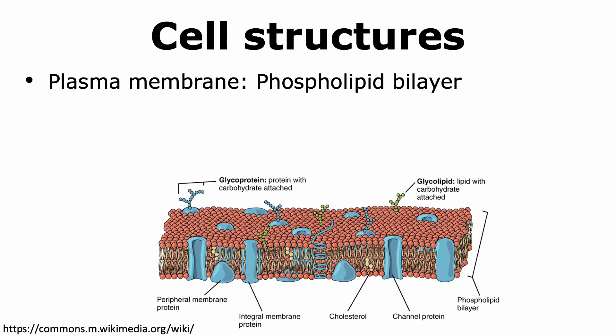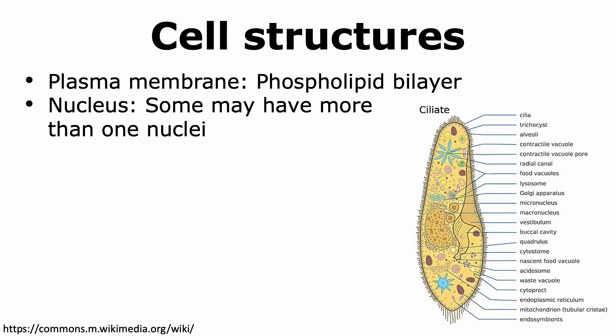A typical protist cell has a plasma membrane that is made up of a phospholipid bilayer. This is similar to what is observed in bacteria, but different from what is seen in archaea. All protists have a nucleus, and in some cases they may have even more than one. For example, in Paramecium, it has a macronucleus and one or more micronuclei.